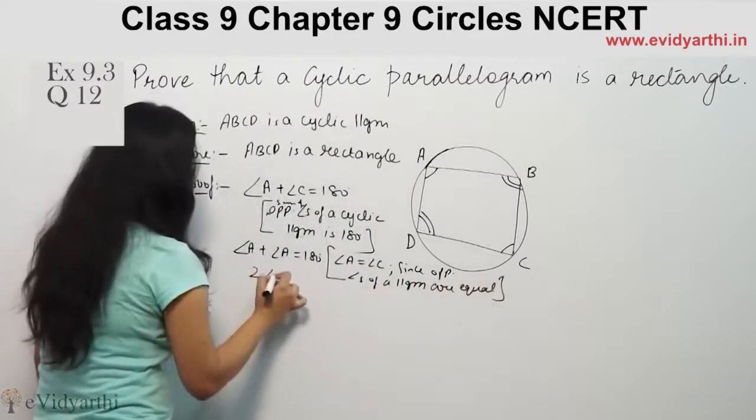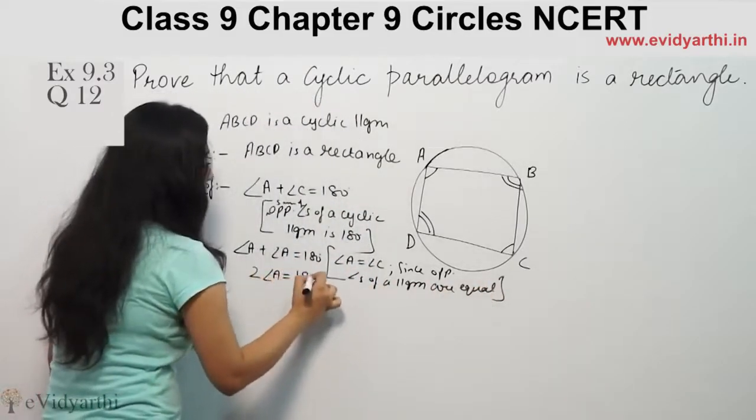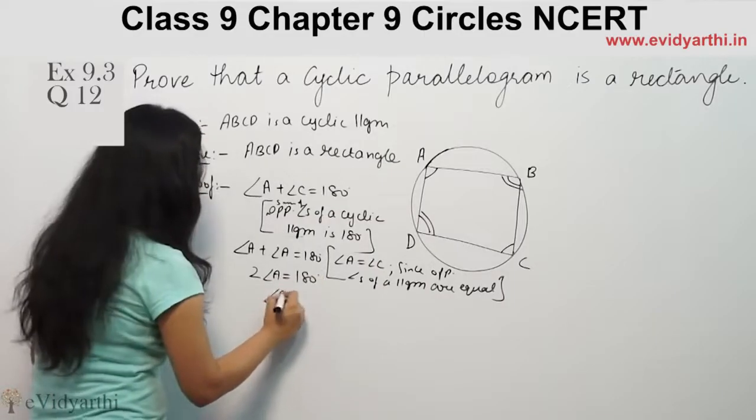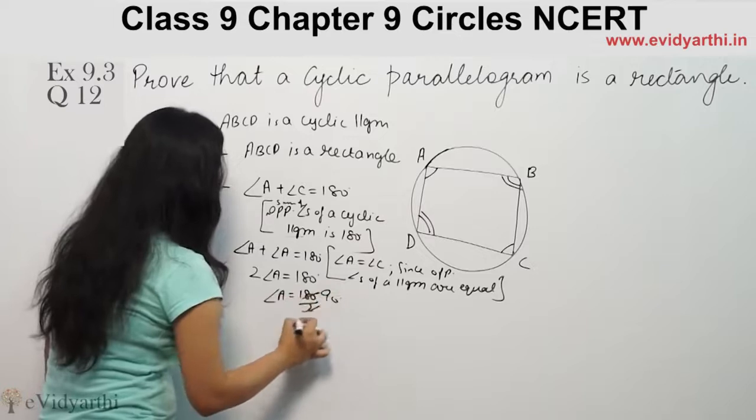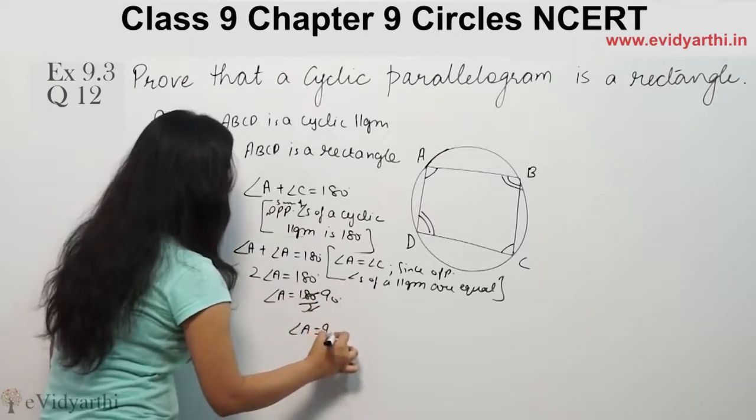So we can see twice of angle A equals 180 degrees. Therefore, angle A equals 180 divided by 2, which is 90 degrees.